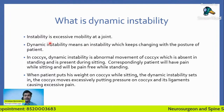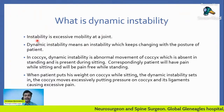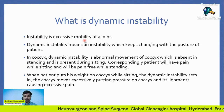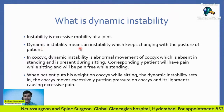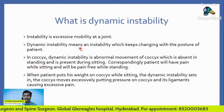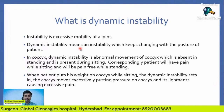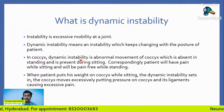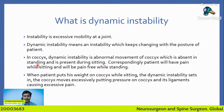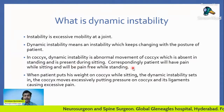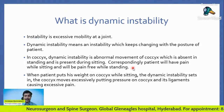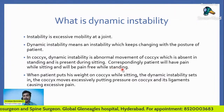Instability is excessive mobility at a joint. Dynamic instability means an instability which keeps changing with the posture of the patient. In the coccyx, dynamic instability is abnormal movement of the coccyx which is absent in standing and present during sitting. Correspondingly, the patient will have pain while sitting and will be pain-free while standing.